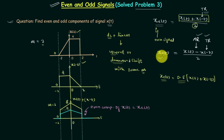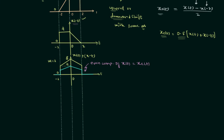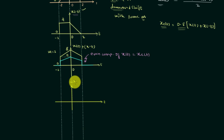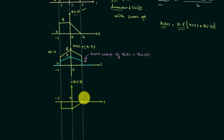Now we will obtain the odd component XO(t). We already have X(-t), so the next step is to perform the amplitude reversal of X(-t) — flip the signal about the X axis to get minus X(-t). From minus 2 to 0, minus X(-t) will be constant with value equal to minus 4.